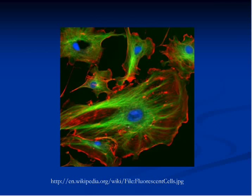Cytoskeleton is a network of microfilaments and microtubules which act like a skeleton. This cytoskeleton determines the shape of a cell and also maintains this shape. Many cells have to change their shapes during their life cycle, and it is this cytoskeleton which helps them changing their shapes.